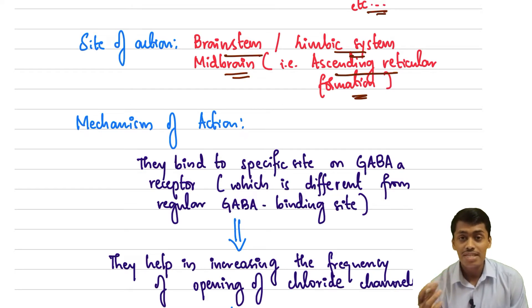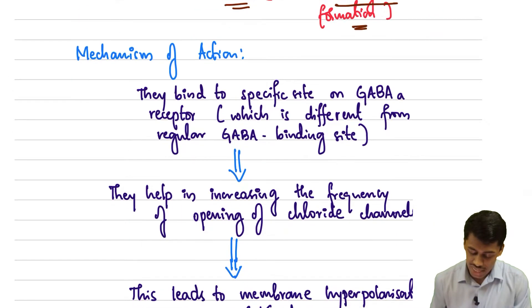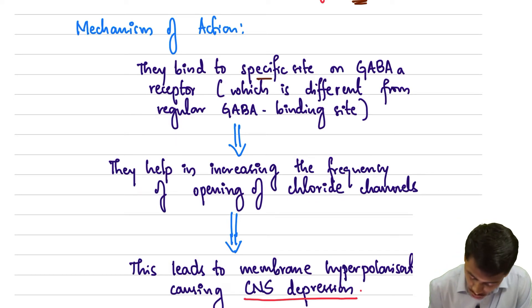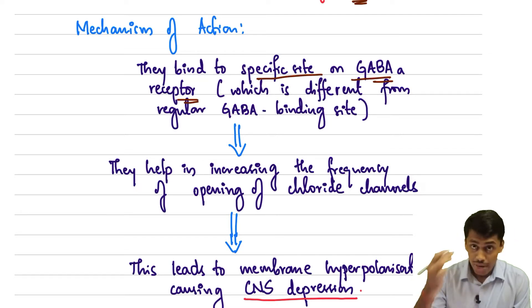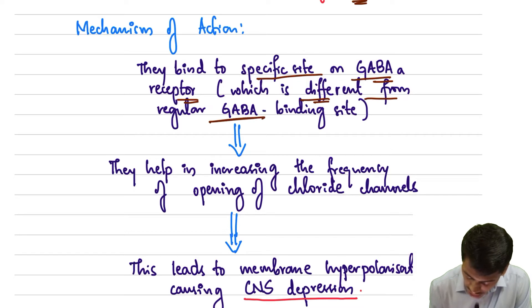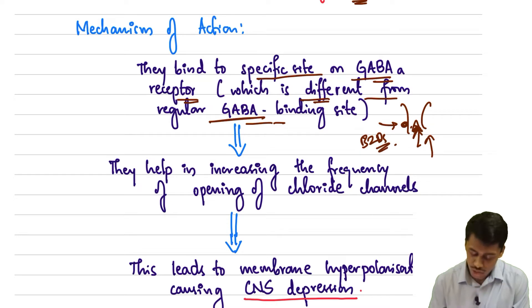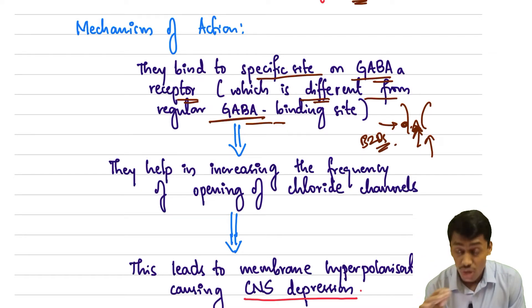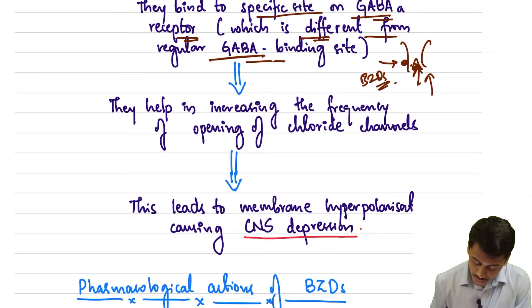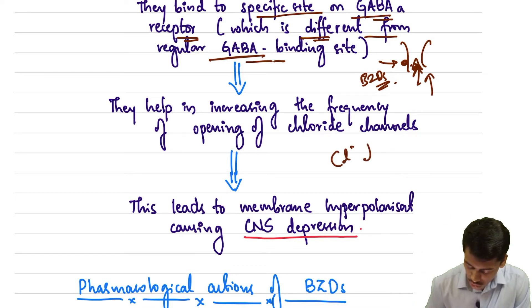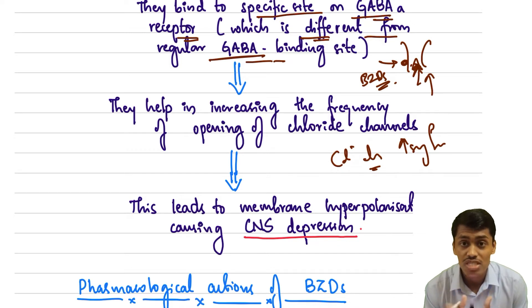Now let's look at the mechanism of action — a very important part for your university exams, so listen carefully. These benzodiazepines bind to a specific site on the GABA-A receptor, which is different from the normal GABA binding site. After attaching to it, they help in increasing the frequency of opening of the chloride channels.